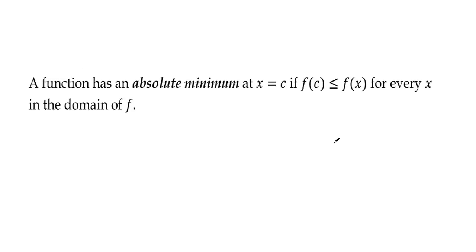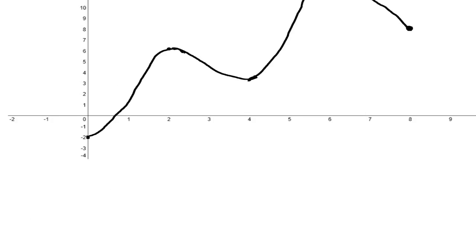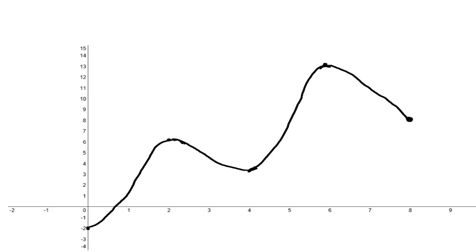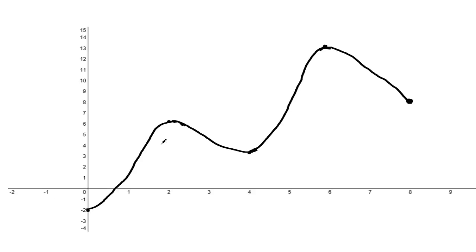A function has an absolute minimum at x equals c if f(c) is less than or equal to f(x) for every x in the domain of f. Let's take a look at the graph again. Well, the lowest point is here at x equals 0 and the y value there is negative 2. So f has an absolute minimum at x equals 0 and the absolute minimum value is negative 2.